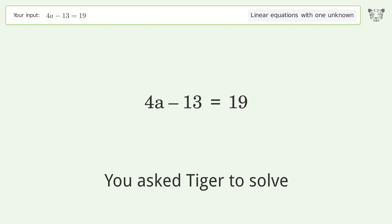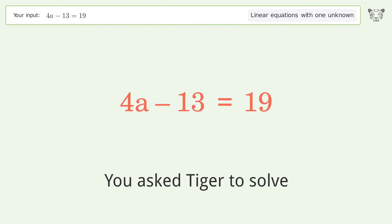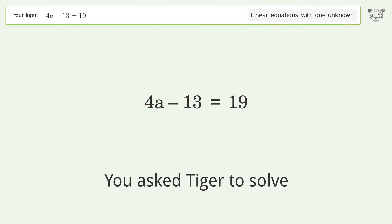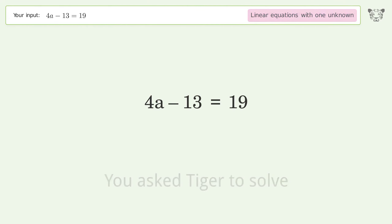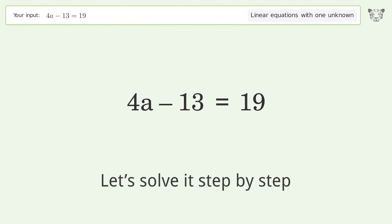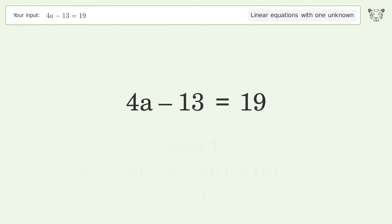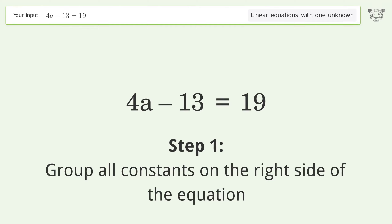Tiger is asked to solve a linear equation with one unknown; the final result is a equals 8. Let's solve it step by step — group all constants on the right side of the equation.